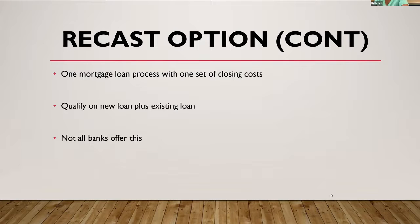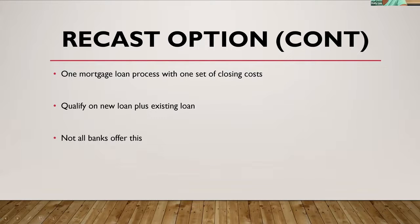With the recast, you'll qualify on your existing loan plus the new loan plus the PMI. Not all banks offer this, so if this is something your customer is interested in, you just need to make sure you connect them with a bank that potentially offers this. So that's the wrap on how to buy a house non-contingent right now. In this market these days, it's very important to try to be able to do this. Do you have any questions for us?